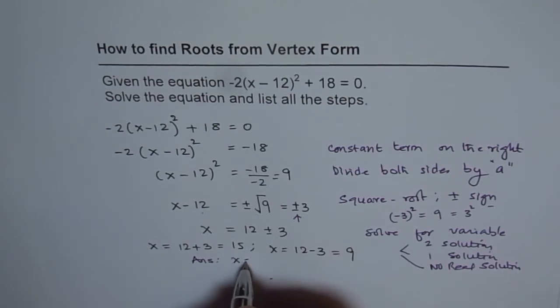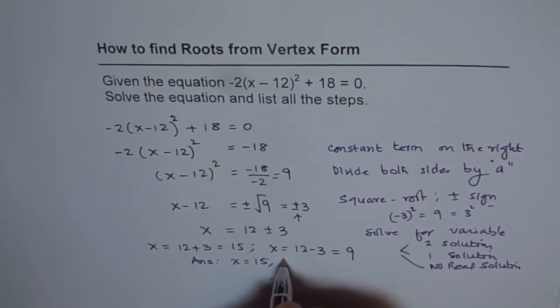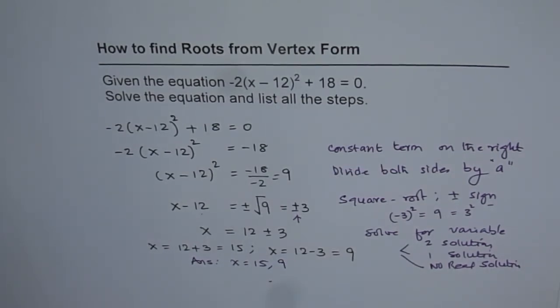The answer is x = 15 and 9. These are the two solutions to the given equation. I hope the steps are clear and these steps should be followed whenever the equation is given in vertex form for solving. I hope you appreciate it. Thank you and all the best.